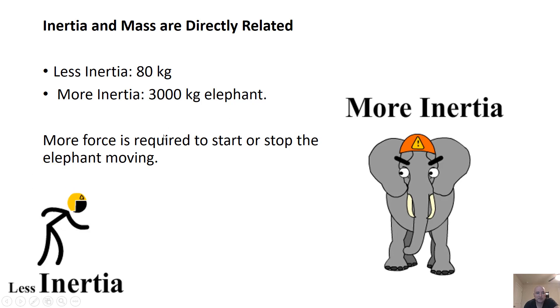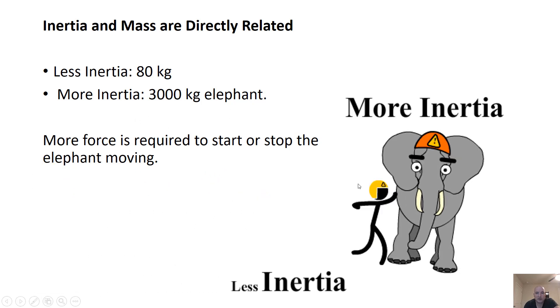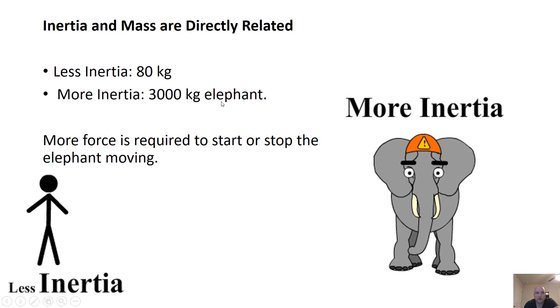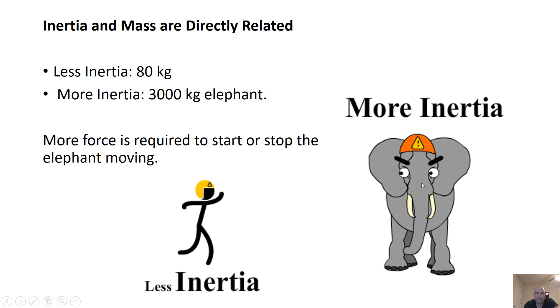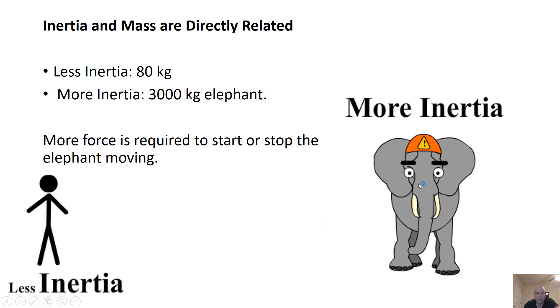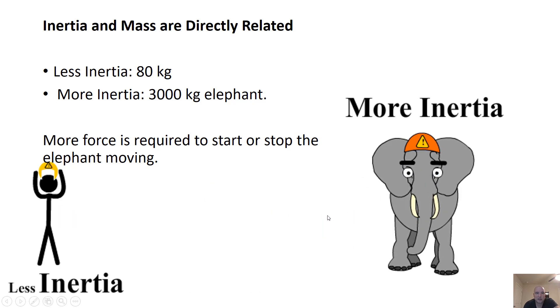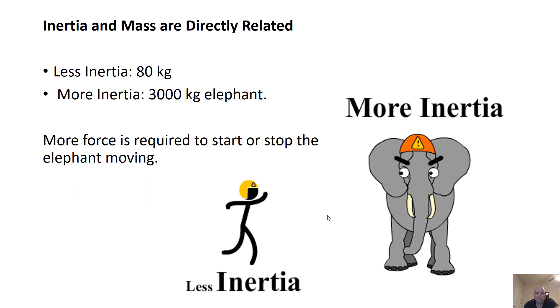Inertia is directly related to mass. So here's an 80-kilogram person, and you have a big old elephant, a 3,000-kilogram elephant. The 3,000-kilogram elephant is going to be much harder to slow down. It's directly related to inertia. The more mass, the more inertia.